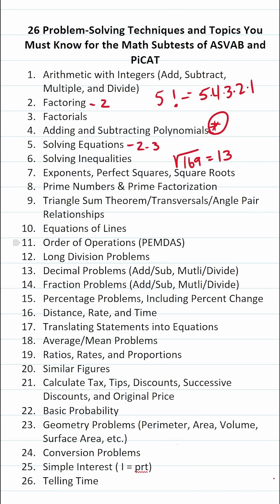You have to know about prime numbers and prime factorization. Number nine, you have to know about the triangle sum theorem, transversals, and angle pair relationships. So for example, you should know that complementary angles add up to 90 degrees and supplementary angles add up to 180 degrees. You have to know how to write equations of lines.